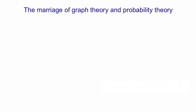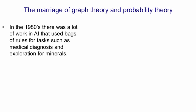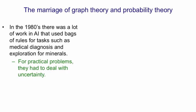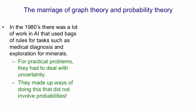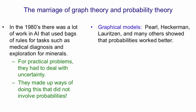Probabilities eventually found their way into AI via something called graphical models, which are a marriage of graph theory and probability theory. In the 1980s, there was a lot of work on expert systems in AI that used bags of rules for tasks such as medical diagnosis or exploring for minerals. These were practical problems, so they had to deal with uncertainty. People in AI disliked probabilities so much that even when they were dealing with uncertainty, they didn't want to use probabilities, so they made up their own ways of dealing with uncertainty. You can actually prove that this is a bad bet. Graphical models were introduced by Pearl, Heckerman, Loritzan and many others who showed that probabilities actually worked better than the ad hoc methods developed by people doing expert systems.